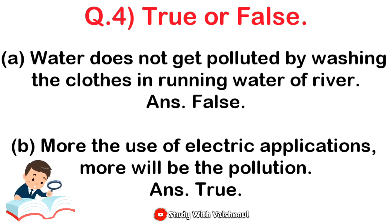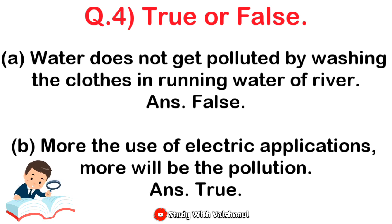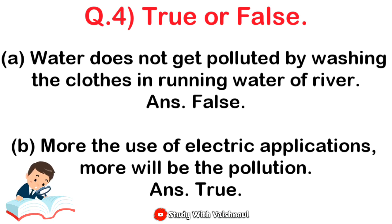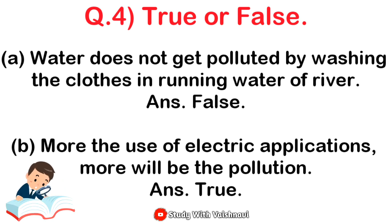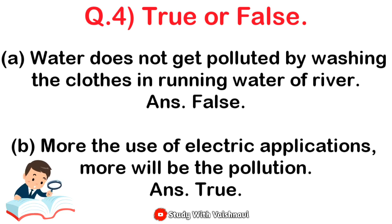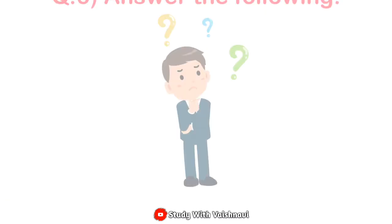Second: more the use of electrical appliances, more will be the pollution. Answer: True. Most of the electricity generated in India is by burning coal at power generation plants, thus causing lots of air pollution. More the electricity is used by using more appliances, there will be more pollution. However, electricity generated through solar energy cannot cause pollution. Question number four is completed.